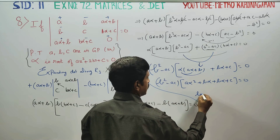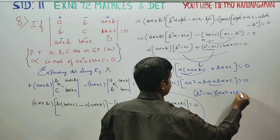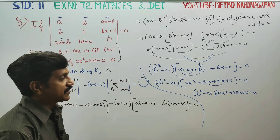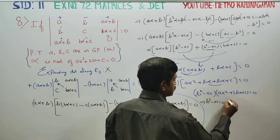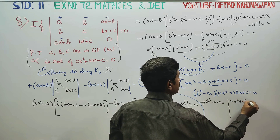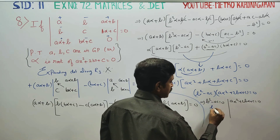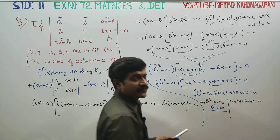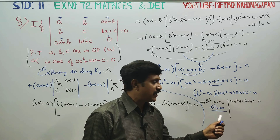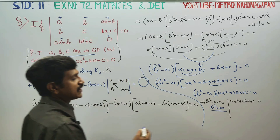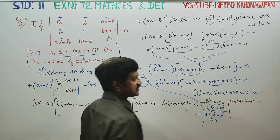Next, b² minus ac equals zero means b² equals ac. This is the condition for GP — if three terms a, b, c are in GP, then b² equals ac. This is the standard GP formula. So b² equals ac implies a, b, c are in GP. This is the GP condition. First part is proved.